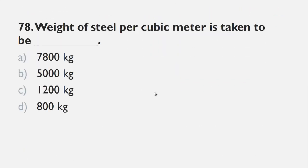MCQs number 78 is, weight of steel per cubic meter is taken to be. The choices are a 7800 kg, b 5000 kg, c 1200 kg and d 800 kg. The unit weight of steel in FPS system is 490 lb per cubic foot and MKS system is 7800 kg per meter cube. So, the right choice for this question is a 7800 kg.